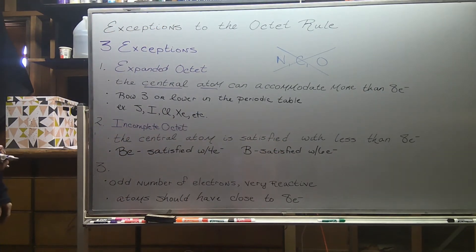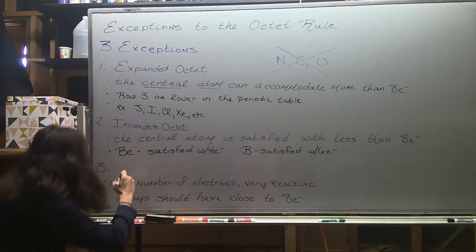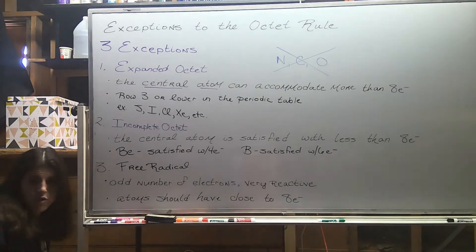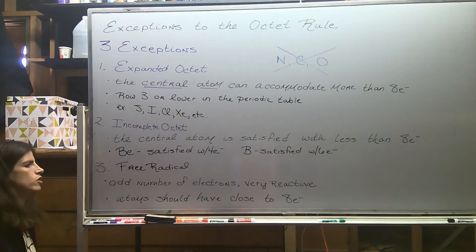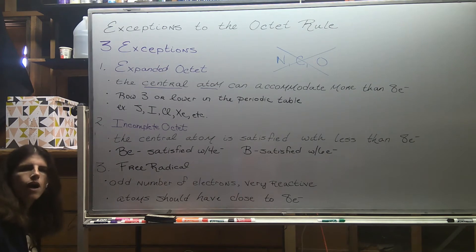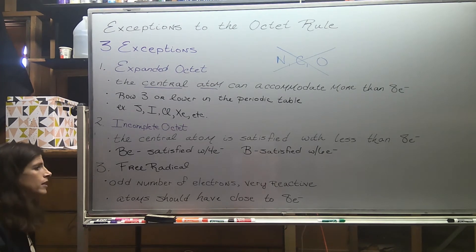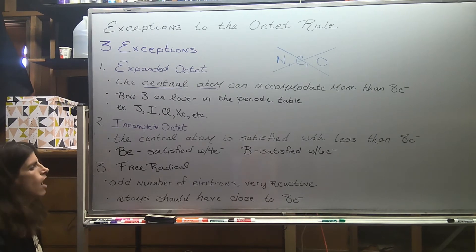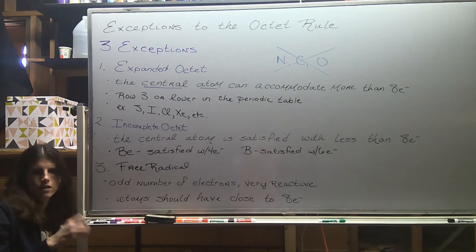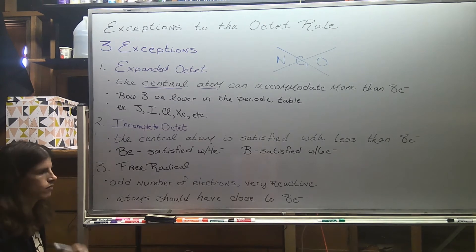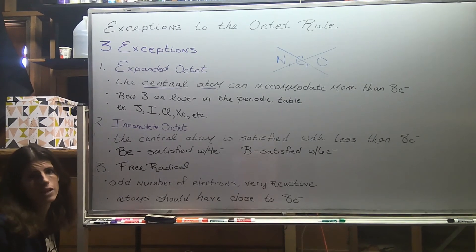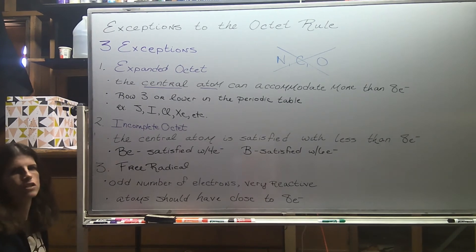The last exception is a free radical. You recognize this through your electron math - when you do your electron math and get an odd number of electrons, you have a free radical situation. These are not very stable and are very reactive. Smog and air pollution are associated with free radical chemistry, and free radicals are also linked to aging and cancer in the body. UV light has a lot of potential to create free radicals. When drawing the structure, get all atoms as close to eight electrons as possible - someone will have to have seven or nine. Also double-check that you didn't miss a negative or positive sign, which could turn it into a non-exception.